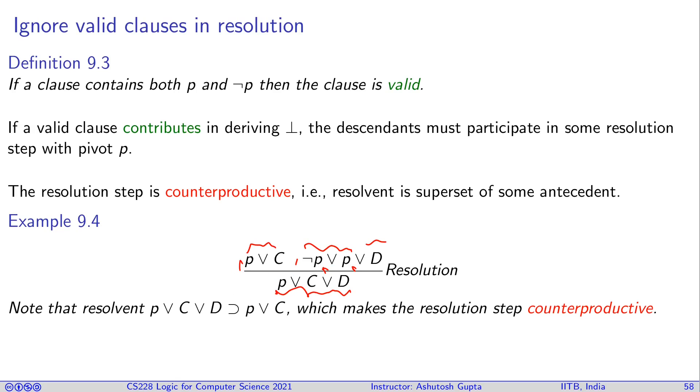You can see that this clause is superset of this clause. So, at the end of the day, P was not removed from this step. So, anything can be derived from here can be derived from there.